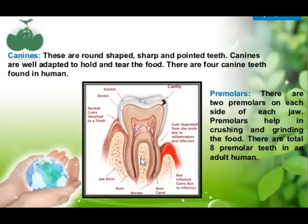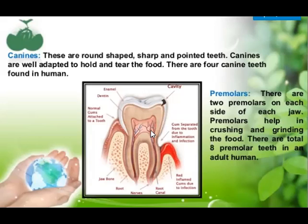Here is the internal structure of a tooth. This outermost covering is known as enamel — it is the hardest substance in our body. Inside the enamel, this hard part is the dentine, and inside the dentine, it is the soft part which is known as pulp.